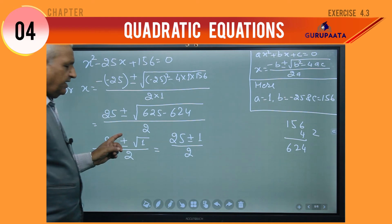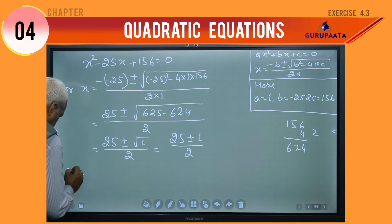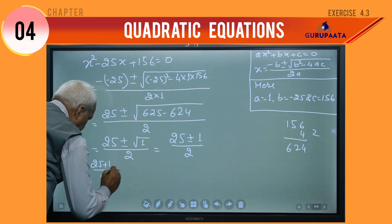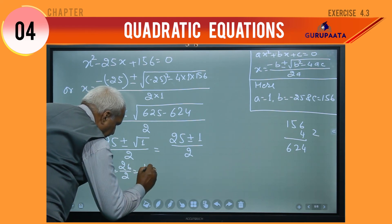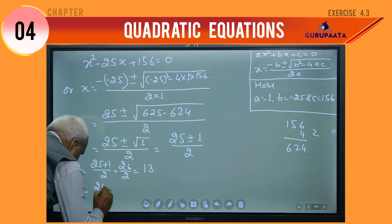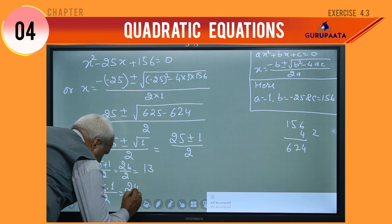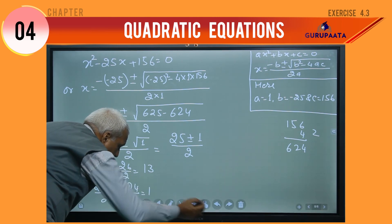So we get two values for x. Either x equals 25 plus 1 divided by 2, which is 26 by 2, equal to 13. Or x equals 25 minus 1 divided by 2, which is 24 by 2, equal to 12.